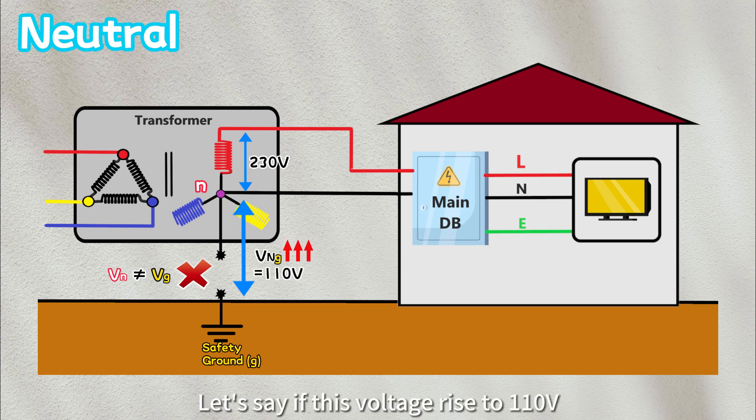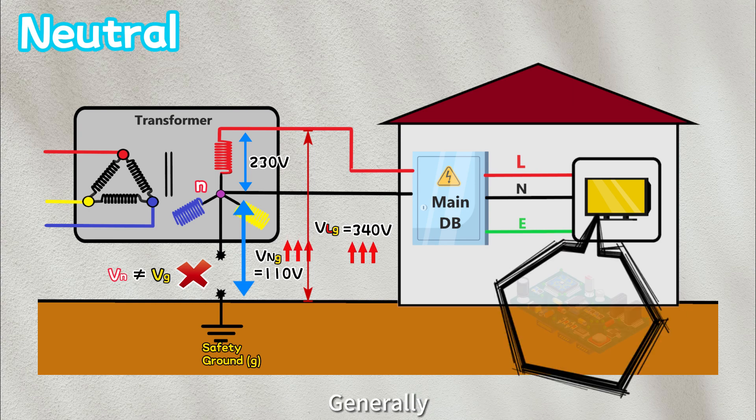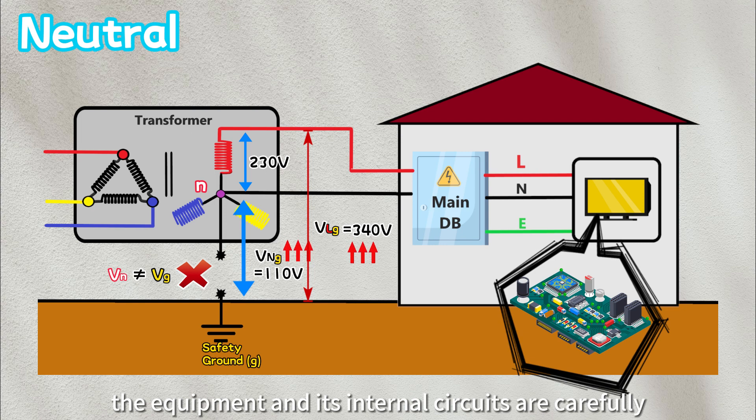Let's say if this voltage rise to 110 volts, while the secondary voltage of the transformer remains at 230 volts, the live-to-ground voltage will also increase to 340 volts. Generally, the equipment and its internal circuits are carefully designed with specific insulation voltages.